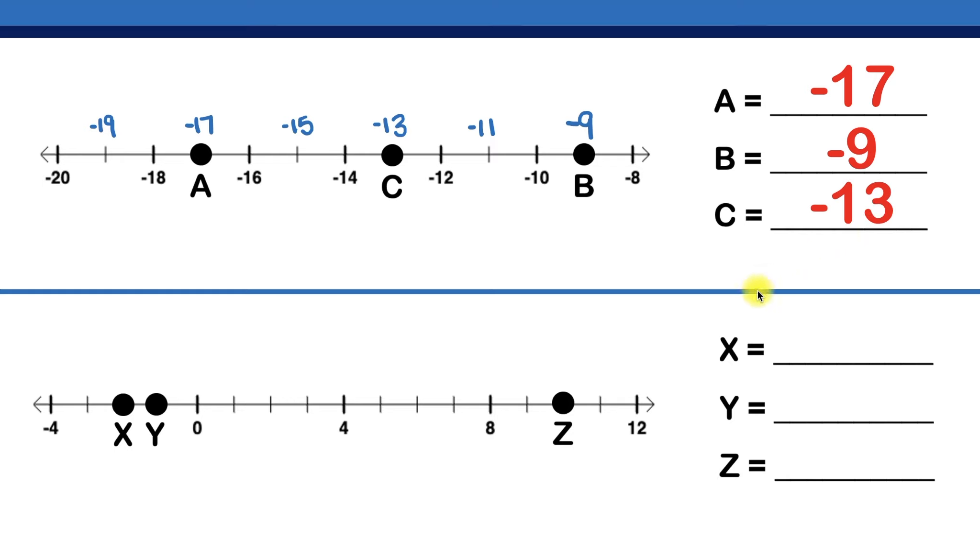So now let's go to the next number line. Remember, zero is the most important integer that there is, because it separates the positive values that go to the right and the negative values that go to the left. So since we have zero here, we can use that as a really good starting point.